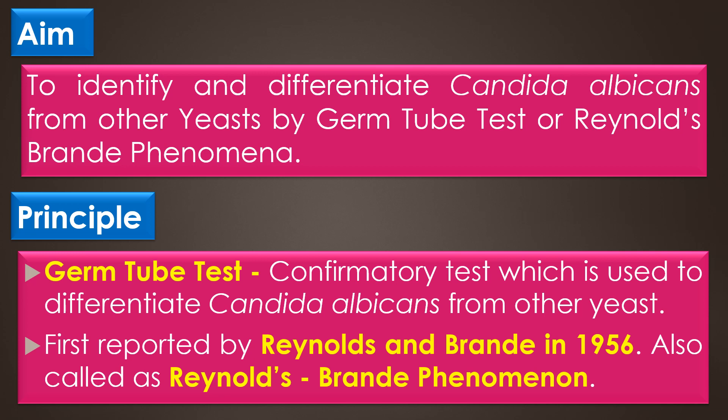The principle: the germ tube test is the confirmatory test which is used to differentiate Candida albicans from other yeast. Germ tube formation was first reported by Reynolds and Brandy in the year 1956, so it is also called as the Reynolds-Brandy phenomenon.